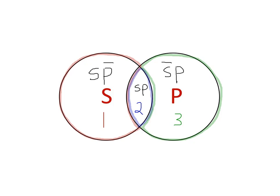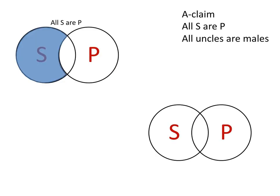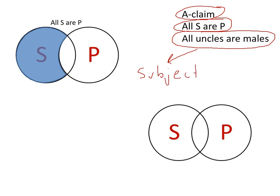So let's look at an A claim here. Here's the standard form A claim, the claims of the form all S are P. So, for example, all uncles are males is an A claim. It's of the form all S are P, where uncles is the subject of the claim. The claim is about uncles. And then males is the predicate.